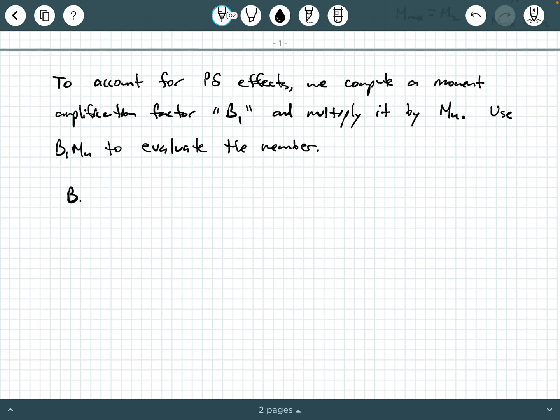So let's go ahead and figure out how do we calculate this moment amplification factor? Well, basically we say B1 is equal to CM divided by one minus this big term alpha PU over PE and B1 should always be bigger than or equal to 1.0.